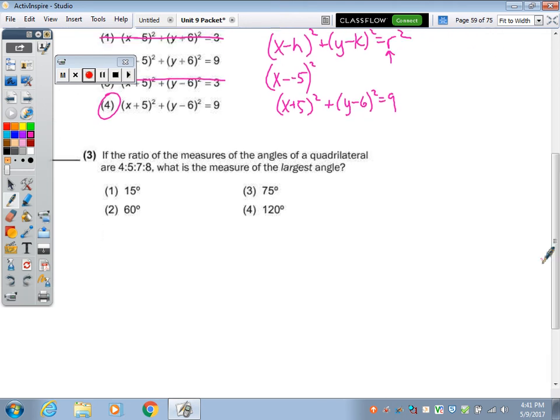Alright, another ratio question. So remember, the way you handle ratio questions is the ratio of the measures of the angles of a quadrilateral are 4 to 5 to 7 to 8. So you put x's in there as a scale factor. You know that the angles in a quadrilateral add to 360. That's on your formula sheet. You add these together, you're going to get 24. That tells you x is 15. And the question is not what is x, so don't fall for that. The question is largest angle. So 8 times 15, which is 120.